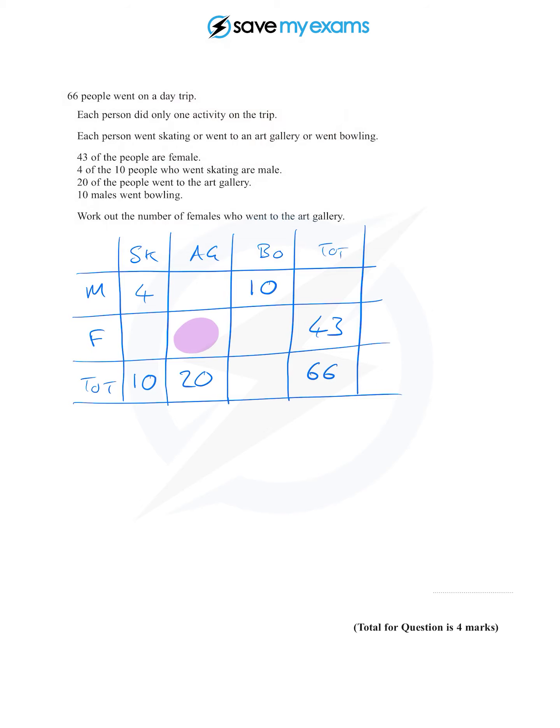I'm actually going to start with this column here, the totals. As we said earlier we can work out the number of males by doing 66, which is the total number of people, minus 43, which is the total number of females, and 66 minus 43 is 23.